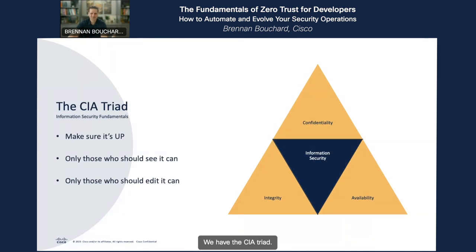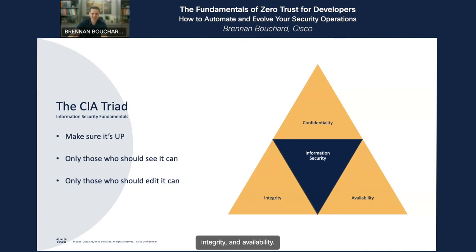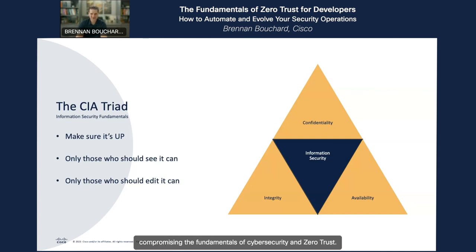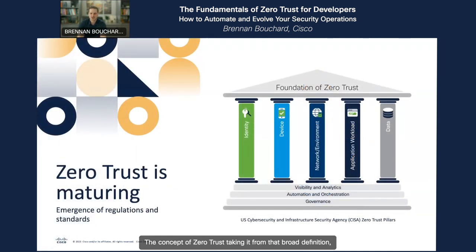If those three principles don't immediately clear things up, let's take it one step further to the basics of cybersecurity — the CIA triad. This is the cornerstone of cybersecurity: confidentiality, integrity, and availability. In essence, resources need to be accessible; only those who should view it can see it; and nothing has been modified by unauthorized parties. These six bullet points comprise the fundamentals of cybersecurity and zero trust. They're abstract and broad, so let's take it a little closer to home.